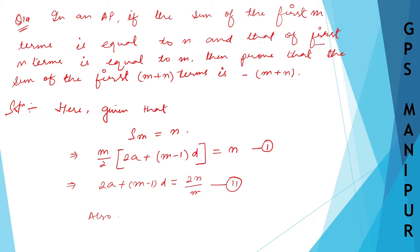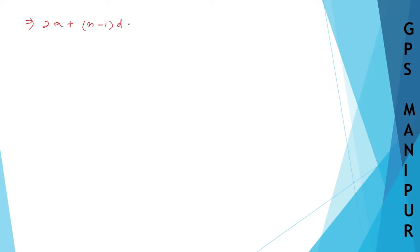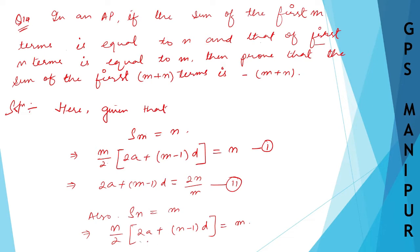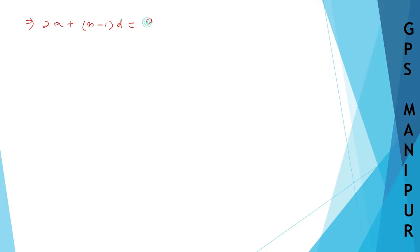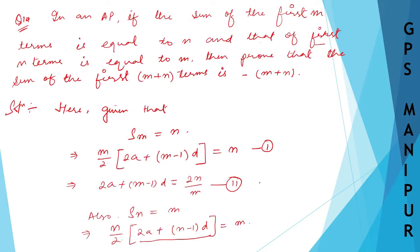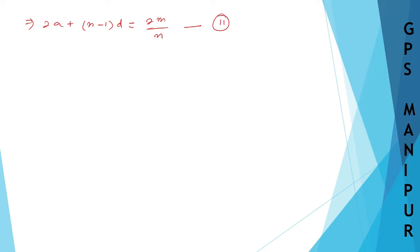Also given S_n = m, so S_n = n/2 × (2a + (n−1)d) = m. Rearranging: 2a + (n−1)d = 2m/n. I'll name this Equation 1.